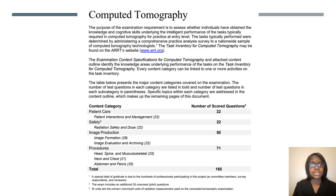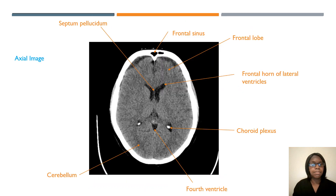This is the outline again, just in case you forgot what will be on the CT registry. Make sure you know that this is an axial image. You can get a sectional anatomy book as well. Just make sure you know everything on this page.